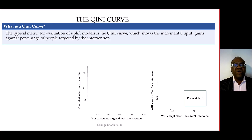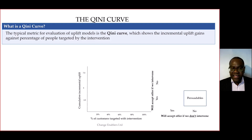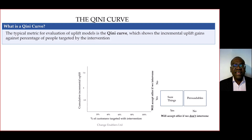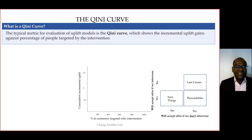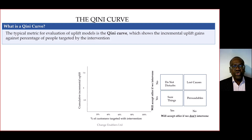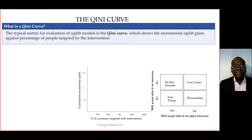The four quadrants are: the persuadables, who would not have accepted the offer but do so because of the intervention; the sure things, those who would have accepted the offer regardless of whether we intervened or not; the lost causes, those who would not have accepted regardless of intervention; and the do not disturb, those who would have accepted but don't, or are less likely to, because of an intervention — meaning the intervention has had a negative effect.